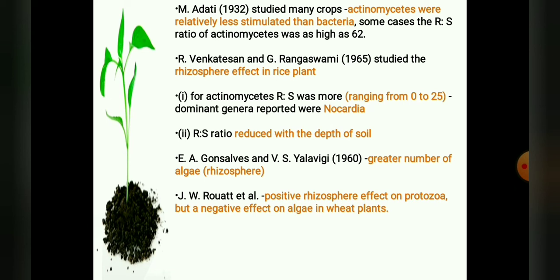In 1965, R. Venkateson and G. Rangaswamy studied the rhizosphere effect in rice plants on bacteria, actinomycetes, and fungi, and reported that for actinomycetes the RS ratio was higher, ranging from 0 to 25 depending on the age of the plant root, and the dominant genera reported were Nocardia. They also found that the RS ratio reduced with the depth of the soil.